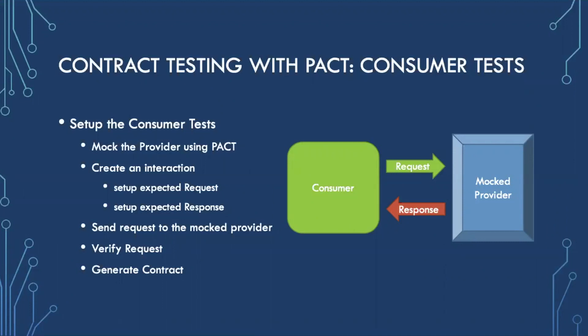So how do we go about implementing contract testing using the PACT tool? You really start with the consumer tests, where you set up your expected requests and your expected response. You set up a mocked provider — we mock that provider service so the client API will be mocked, and we create an interaction that sets up the expected request and expected response. Then we send an actual request to the mock provider, and once it receives it, it'll verify that request against the expected request. If all the checks and verification pass, we'll generate a contract that includes the expected request and response.